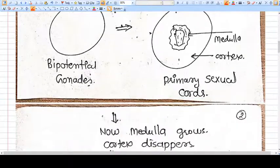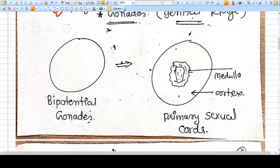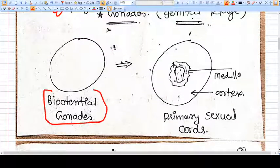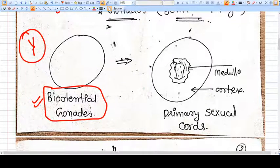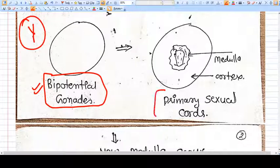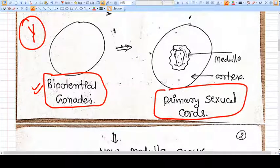Let us discuss in detail. Initially, the gonads are bipotential. That means they can develop either into testis or they can go for ovary. But if we have a Y chromosome and the genotype is male, then there is development of primary sexual cord in this bipotential gonad.